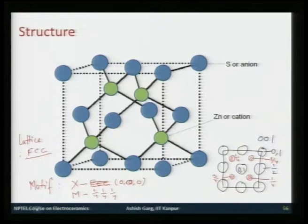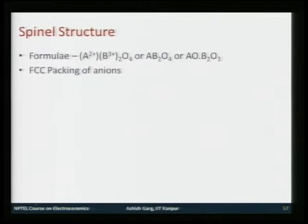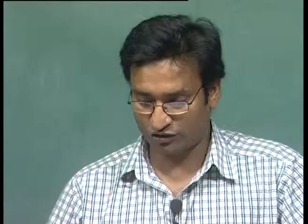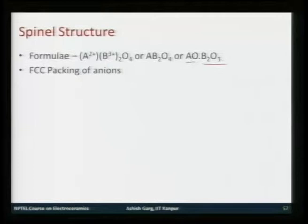The next structure, also based on FCC packing of anions, is the spinel structure. The formula for spinel is AB2O4. Typically, the A ion has a +2 valence and B has a +3 valence. Another way to represent this formula is as a mixture of two oxides: AO and B2O3, so you can think of it as a mixture of an AO sublattice and a B2O3 sublattice.